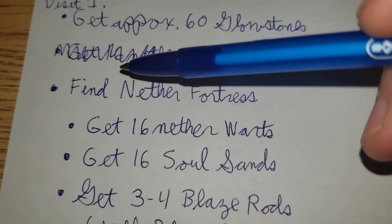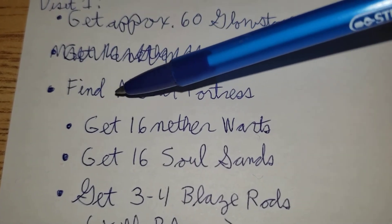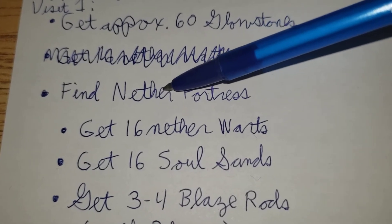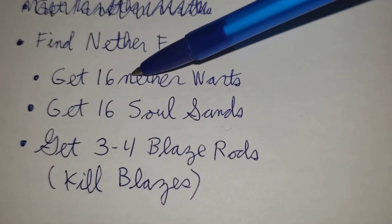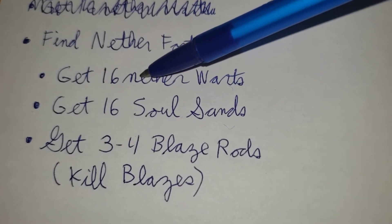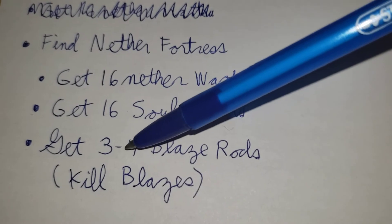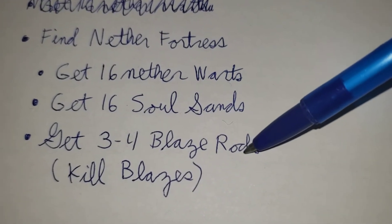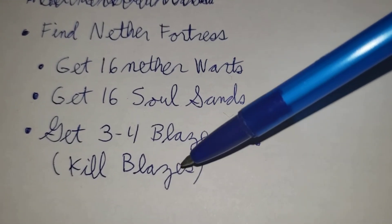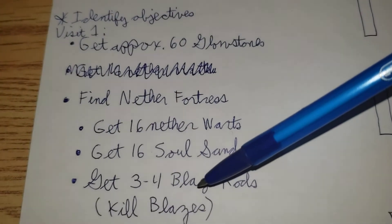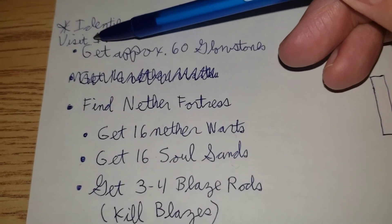Next objectives: find a Nether fortress. And once you're inside the Nether fortress, you get 16 Nether warts, 16 soul sands, and three or four blaze rods. The blaze rods are obtained by killing blazes. So remember, this is for the first visit.